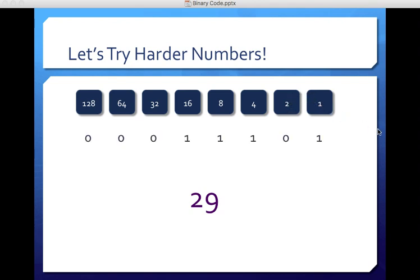So 16 plus eight plus four plus one equals 29. All right, one more, I figure you probably have this down. All right, so 31. So close, not yet 32, so zeros at the start.